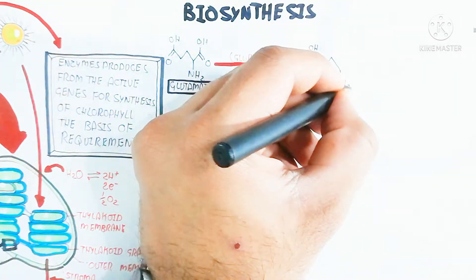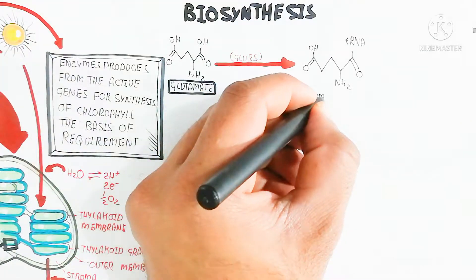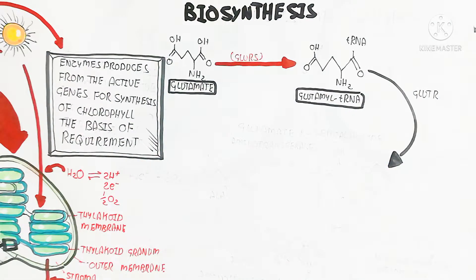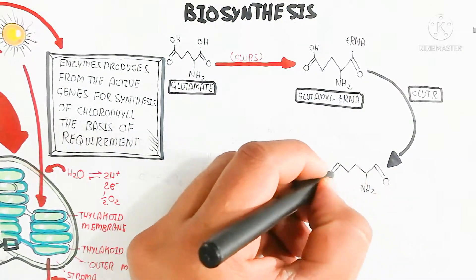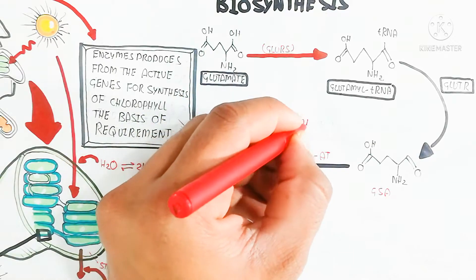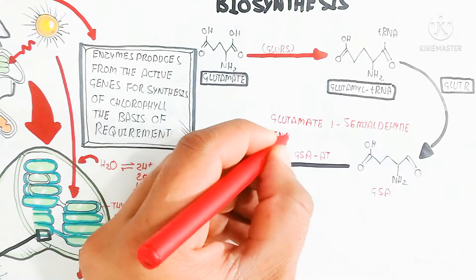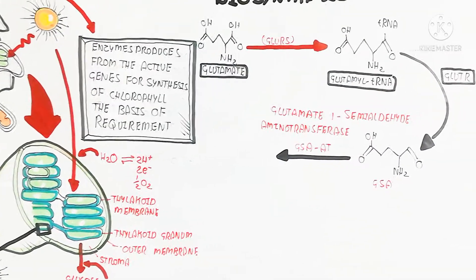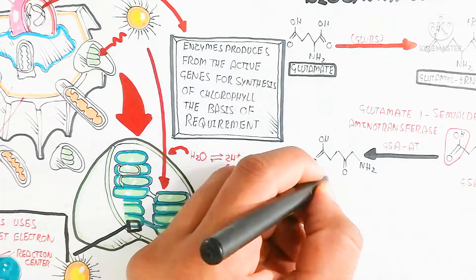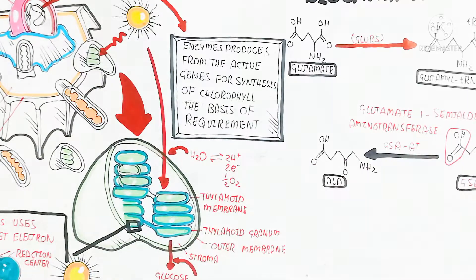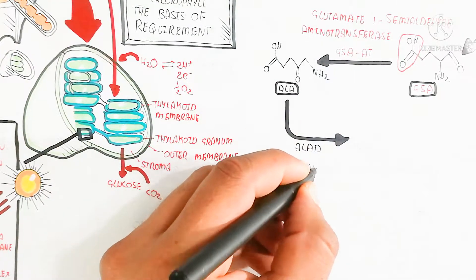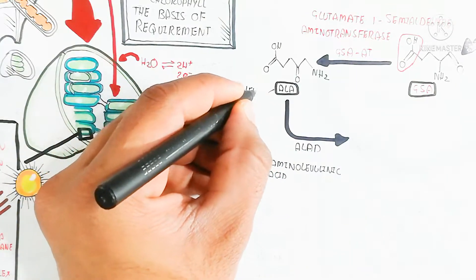Here is glutamate. Glutamate is the amino acid. The glutamyl-tRNA synthetase enzyme is used to form glutamyl-tRNA, because the transfer RNA will bind. This enzyme is used for the attachment of the transfer RNA. Then the glutamyl-tRNA reductase enzyme is used to produce GSA. GSA means glutamate-1-semialdehyde. Then the GSA aminotransferase enzyme is used to produce ALA — aminolevulinic acid.